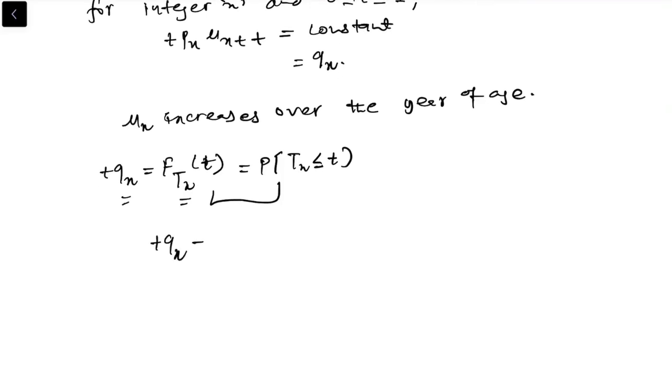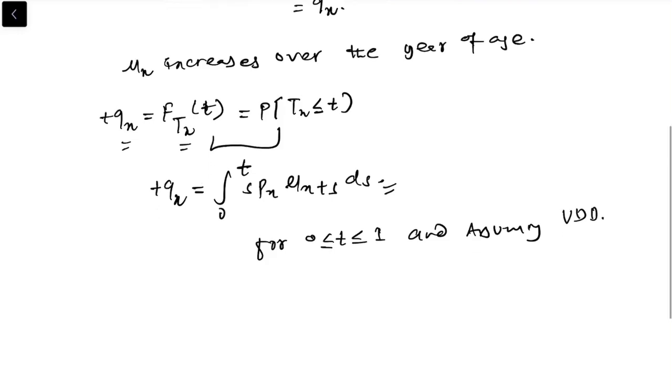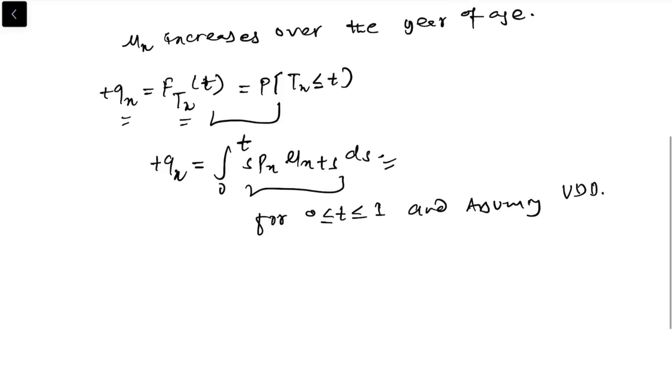Also, tqx equals integral from 0 to t of s px mu x plus s ds. We had seen this formula in the previous video. Now for t lying between 0 to 1 and assuming UDD, we can say that this term is nothing but qx.